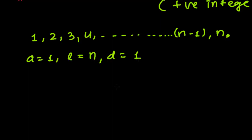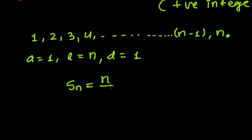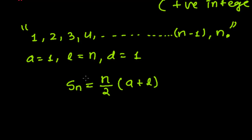There are two methods to find this formula, but I'm using the simplest one. Let's remember the formula: the sum of the n terms of an arithmetic progression. We have learned previously that the sum of n terms of an arithmetic progression equals n divided by two, times the first term plus the last term.